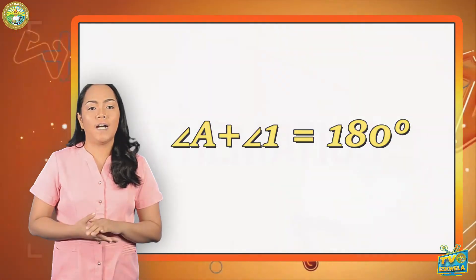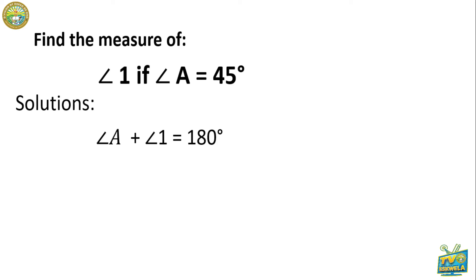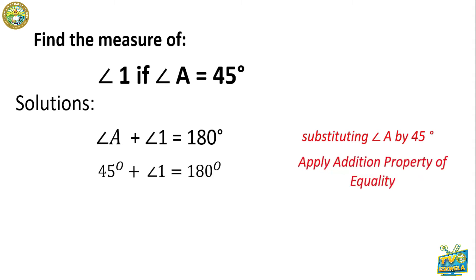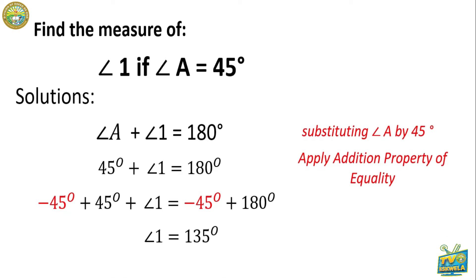For example, find the measure of angle 1 if angle A is 45 degrees. Using the formula: angle A plus angle 1 equals 180 degrees. Begin the solution by substituting angle A with 45 degrees. Then apply the addition property of equality — add negative 45 degrees to both sides of the equation. Subtract negative 45 degrees from positive 45 degrees on the left side. On the right side, subtract 45 degrees from 180 degrees. Therefore, the measure of angle 1 is 135 degrees.